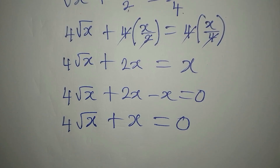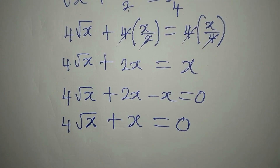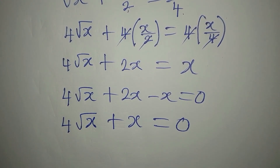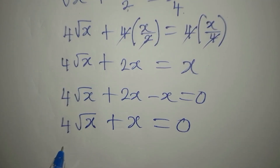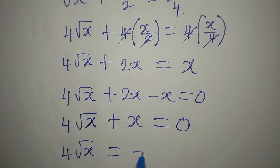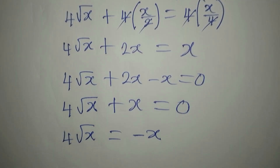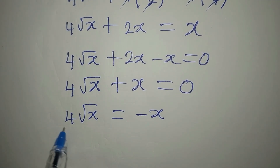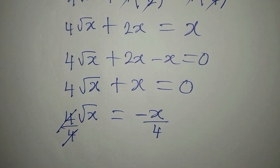We are trying to remove the square root. To do that, take x to the other side: four root x equals negative x, because the plus x becomes negative x on the other side.